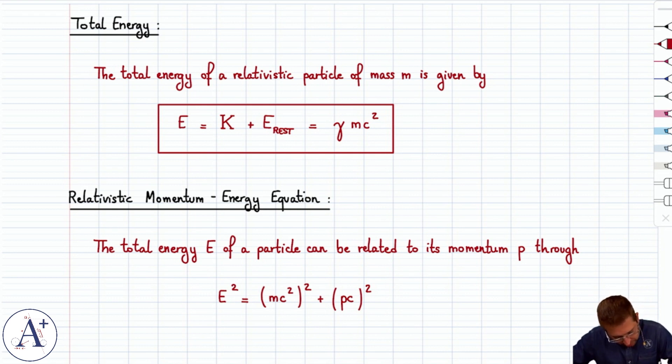And then finally, the momentum energy equation that relates the total energy of a particle to its momentum is E squared equals mc squared squared plus pc squared.